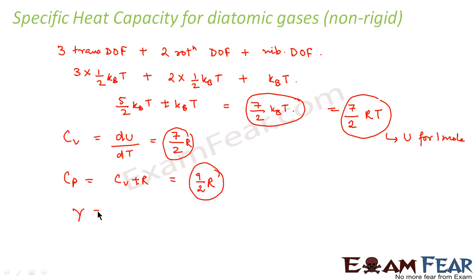So what would be the ratio of the specific heat? That is gamma is Cp by Cv which will be equal to 9 by 7.